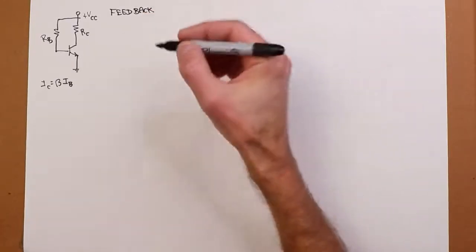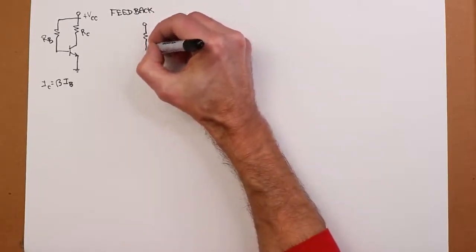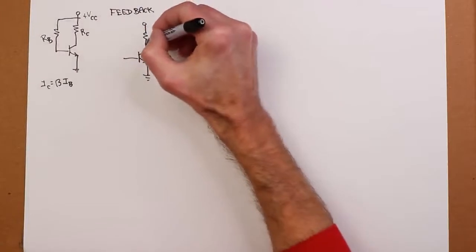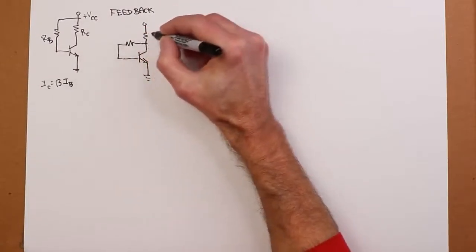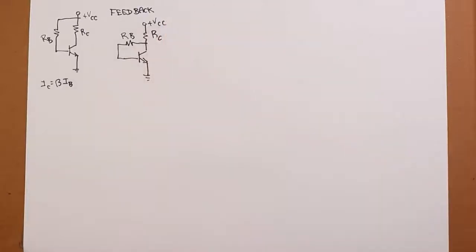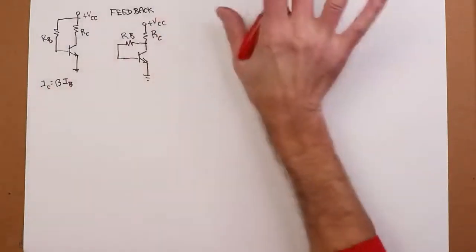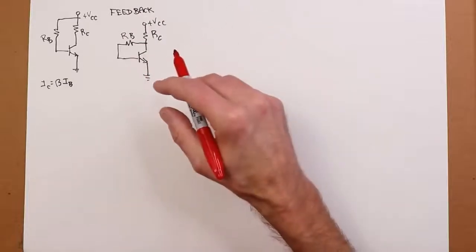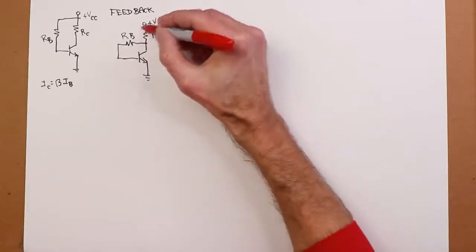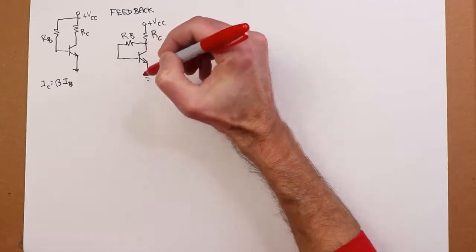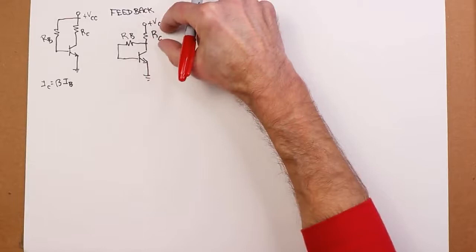So we're going to start with something called collector feedback. And all I'm going to do is take this base resistor and return it to the collector instead of the power supply. This one little change will have a major impact. Now, if we consider what's happening here before we go into any formulas, if there is some base current being produced and there's a change in beta, maybe things heat up, the collector current would go up, and what that would do is produce a bigger drop across the collector resistor.